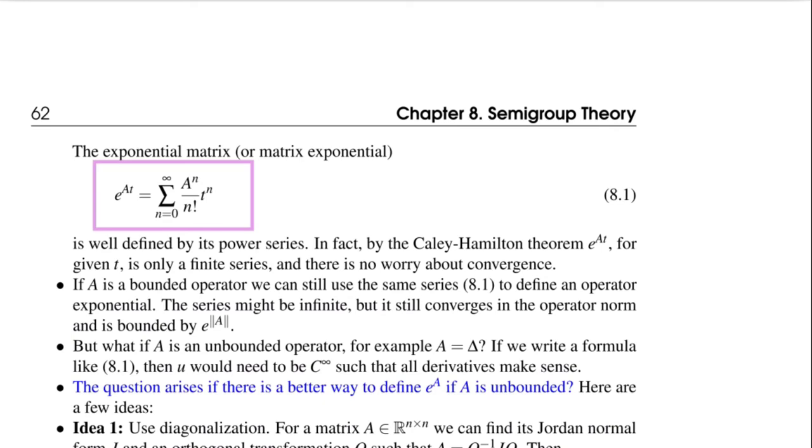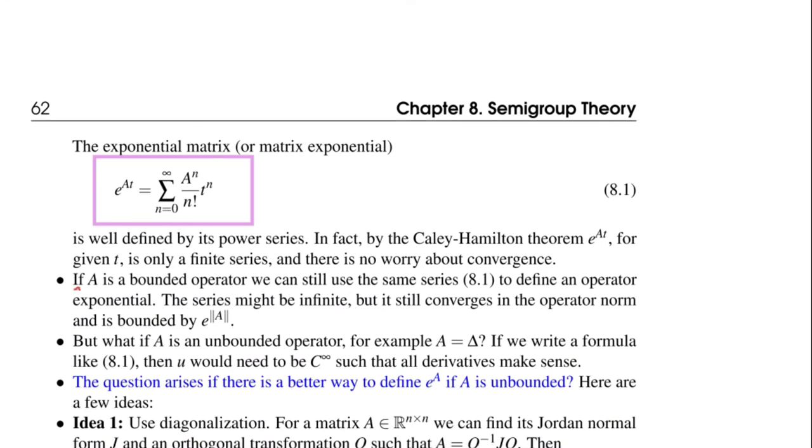If A is bounded, we can still write down the same series. And it converges and is estimated by e to the norm of A. So we can show that this will be an upper bound for that series there.